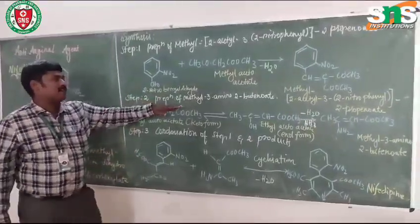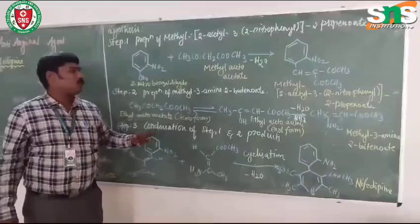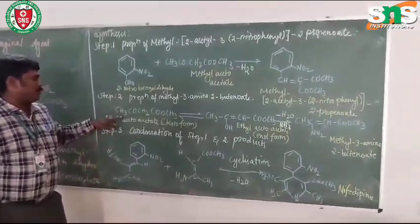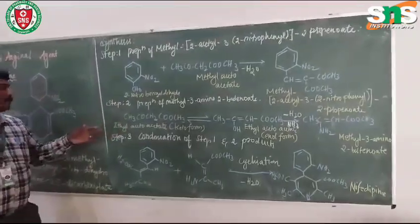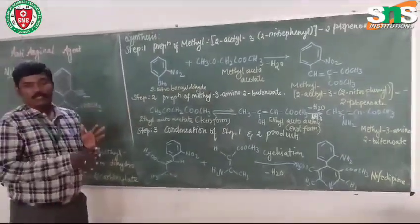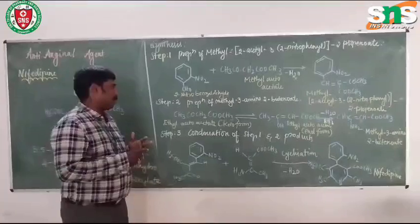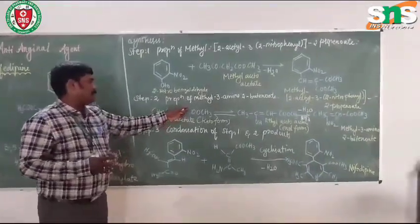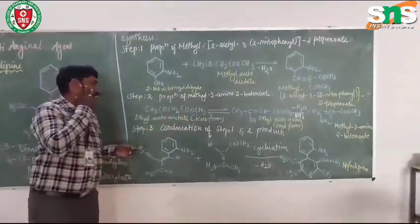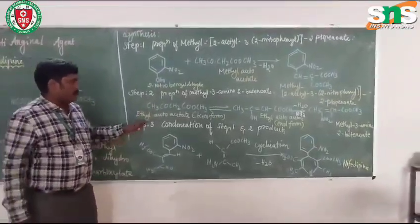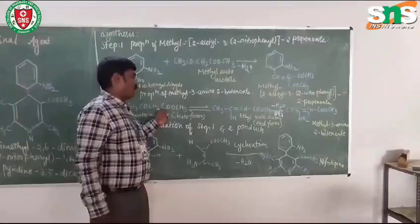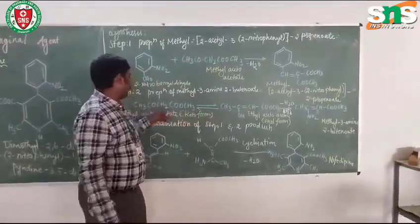The step 2 is preparation of ethyl 3-amino-2-butenoate. Here what will be applied? This is the reaction of ethyl acetoacetate. Ethyl acetoacetate means ester C2H5-O-CO-CH3. It is called as ethyl acetoacetate. So this is the keto form which will be converted to enol form.